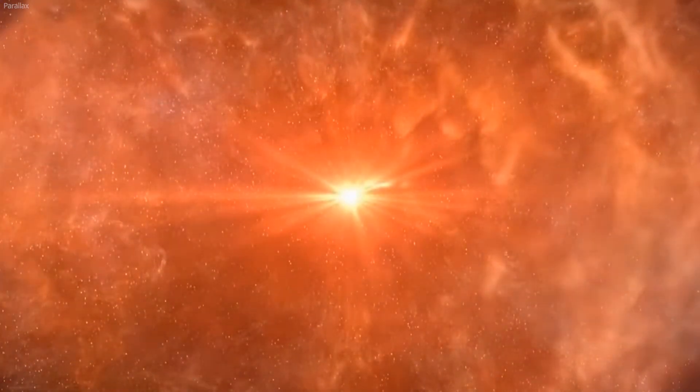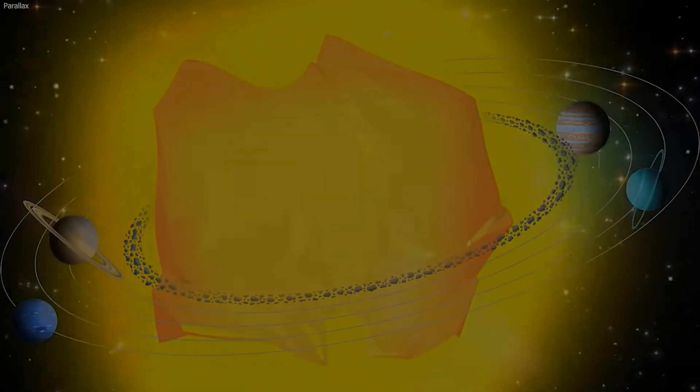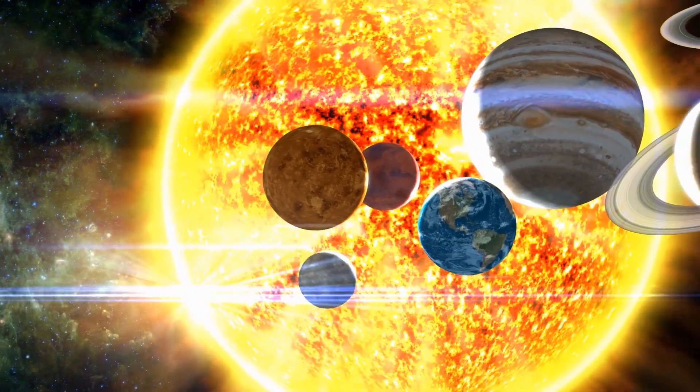If Betelgeuse replaced the Sun in our solar system, then it would have stretched past the asteroid belt and even beyond Jupiter. This means that almost all of the planets would be absorbed in it.